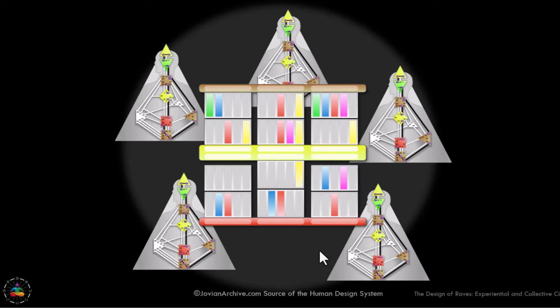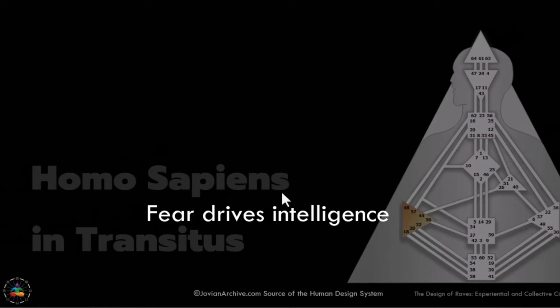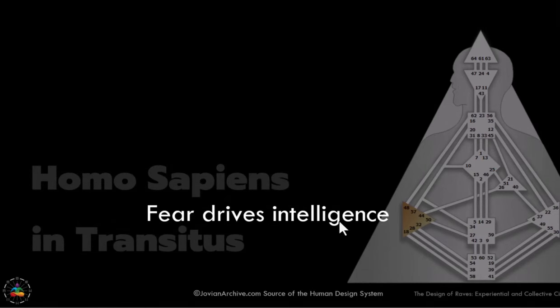They're not interested and have no need to collect splenic system information. These rave children, once in their penta, are not going to fear for their survival — that's not the point. They are so different from what we are. In a human being, in Homo sapiens in transitus, fear drives intelligence. That's us — the strategic human creatures, all about survival. We have to have the survival of our form, our genetic line, our tribes, our cultures, our societies.